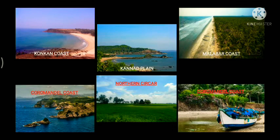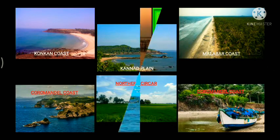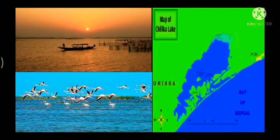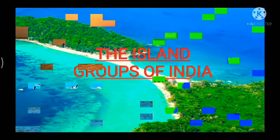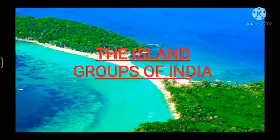Chilka Lake is an important feature along the eastern coast. It is the largest saltwater lake in India and lies in the state of Odisha, to the south of the Mahanadi delta.